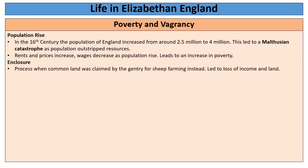We also have a process called enclosure. Enclosure was when common land — where individual villagers were allowed to farm a little strip just to feed themselves and their family — was turned into farming purely for the gentry. It was closed off with fences and hedges, claimed by members of the gentry as their own, where they normally farmed sheep because it was more profitable. This means ordinary people were being kicked off their land, creating poverty.